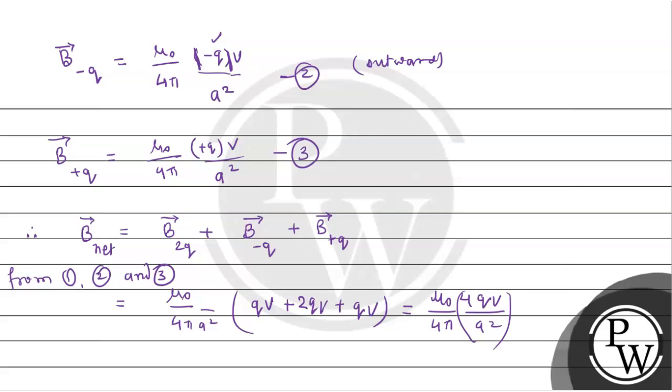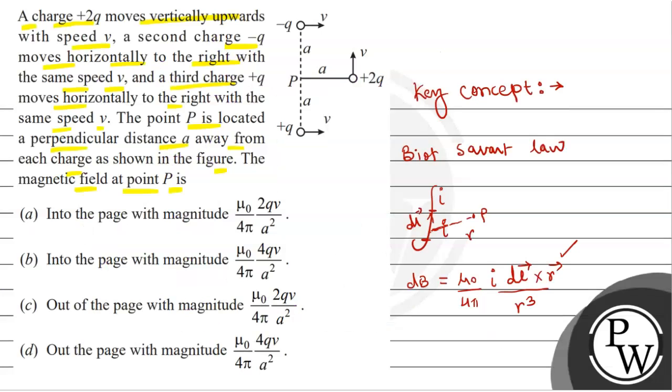So let's see which option is correct. From right-hand screw rule, it will be in outward direction. So option D, this is the right option, out of the page with magnitude μ₀/4π 4QV upon A². I hope you understood it well, best of luck, thank you.